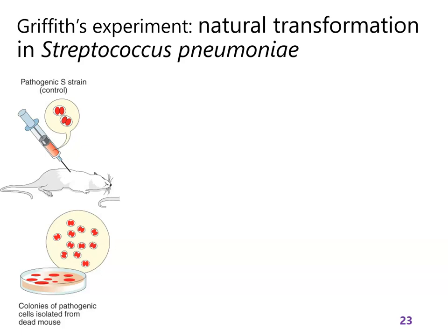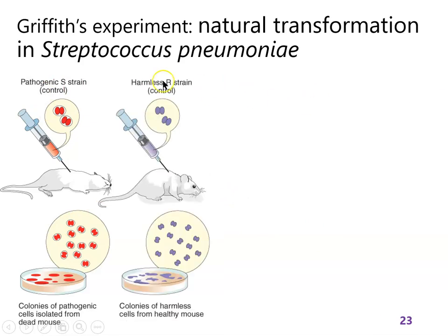There are two different strains of this bacterium. We're going to see a syringe and a mouse and a picture of what type of bacteria are in the syringe, and then what colonies you'd get on a Petri dish from the mouse. There's a pathogenic S strain and a non-pathogenic R strain — smooth versus rough. Colonies on a Petri dish would look smooth versus rough because the S strain makes a polysaccharide capsule — a glycocalyx that protects them from phagocytosis. The R strain doesn't have that.